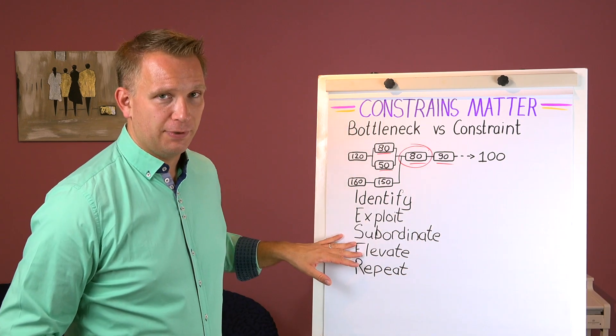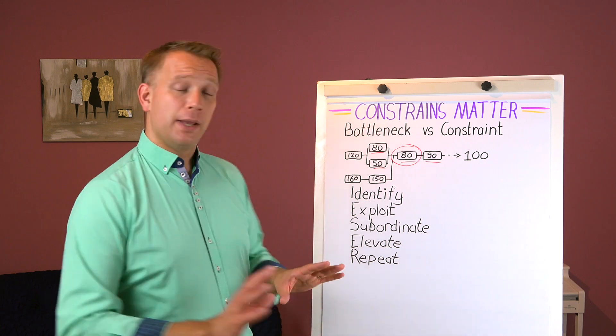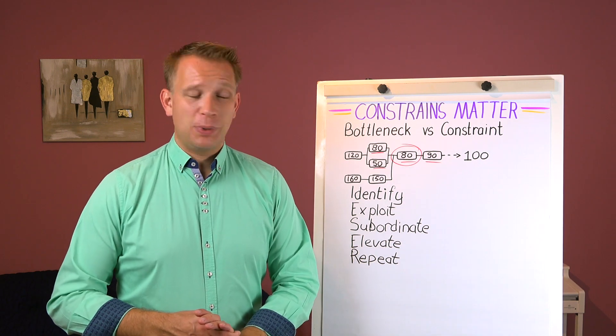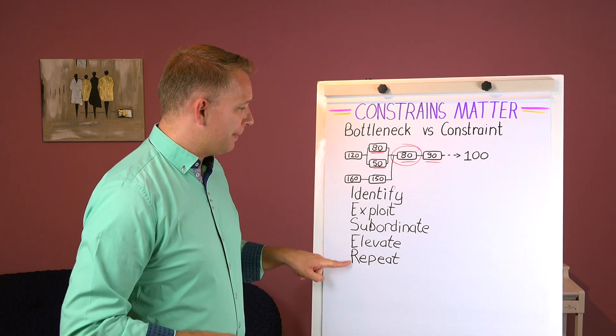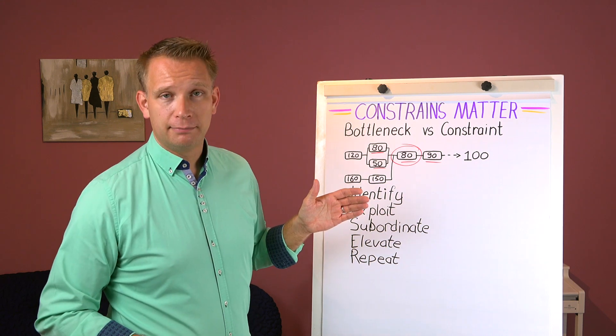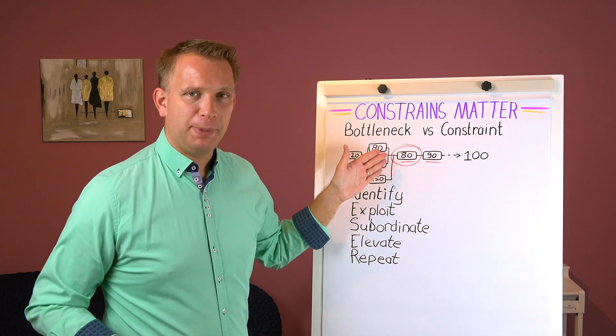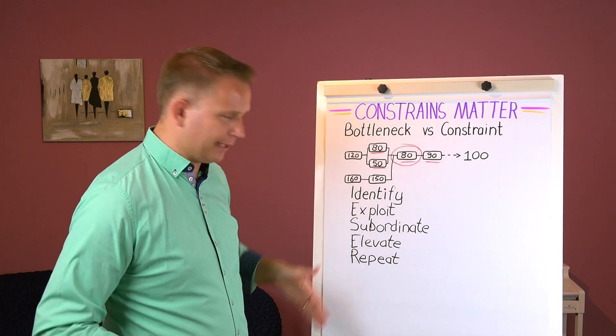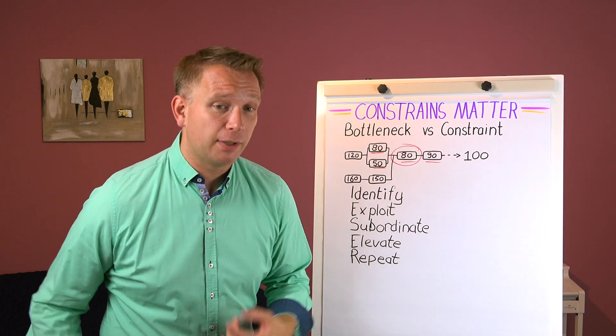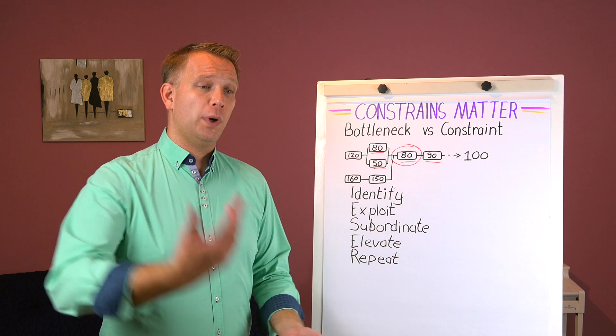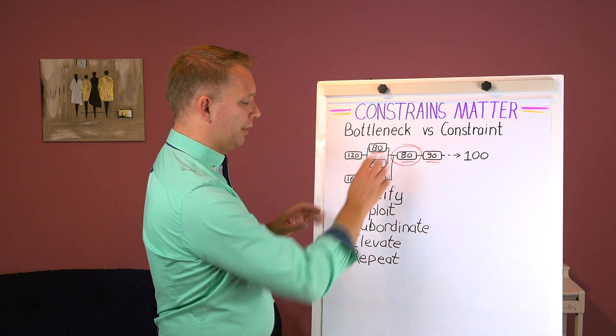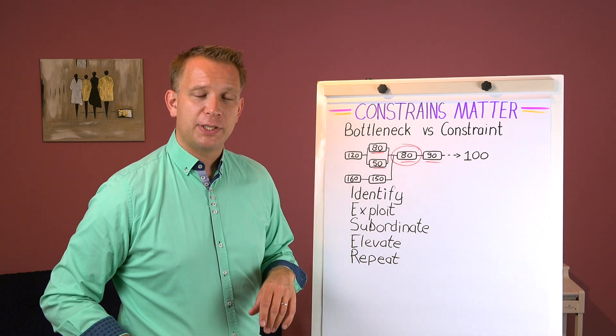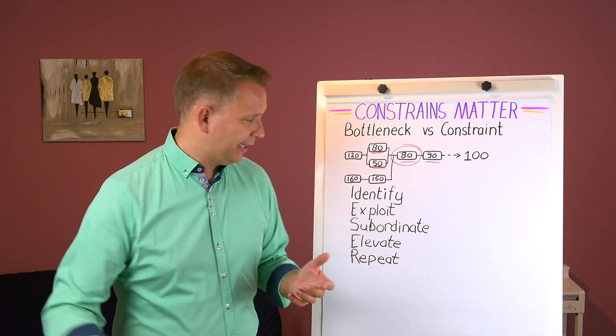And then one of the important things as well, it's almost not a step but repeat this process. Identify your next constraint. It should not be the same one because if you really did this in a good way maybe you have done three or four teams. One improvement team might not be able to do everything to remove this one as a constraint.